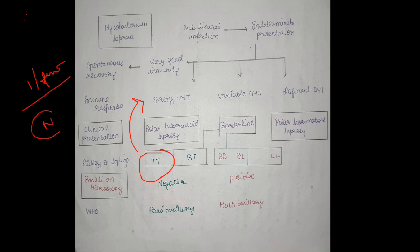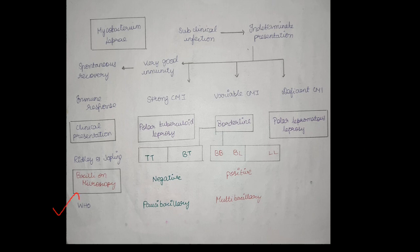In lepromatous type, we have many patches which are bilateral and diffuse. In these patients, micro-organisms will be positive for AFB. WHO has classified leprosy into two major types: one is paucibacillary, the other is multibacillary. Indian classification has five clinical subtypes. First is indeterminate presentation. In the initial stages of leprosy infection, it is very difficult to clinically diagnose the case, so we have the indeterminate type.